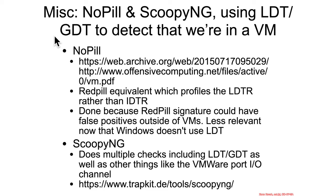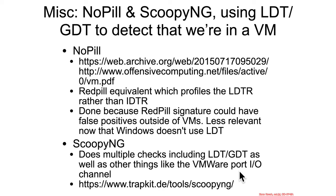Inspired by things like Red Pill, there were subsequent tools like No Pill or ScoopyNG. These would use other things like profiling the LDTR rather than the IDTR. This was done because Red Pill signatures could be unreliable, but it's less relevant these days given that Windows is not using the LDT. ScoopyNG basically includes a variety of different checks, including things such as checking for special virtualization-software-specific mechanisms to detect whether software is running inside a VM. One in particular — VMware Port IO — we'll learn about a little more later in the class.